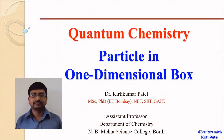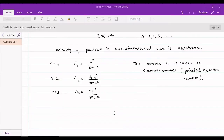Dear students, in our last lecture we had seen about quantum chemistry and we had started with particle in one-dimensional box. We had seen the derivation of the particle moving in one-dimensional box along the x-axis. In this lecture we will continue discussions on the particle in one-dimensional box. We will see the normalization of the equation derived and then plot it to show the probability densities. We had derived the energy for one-dimensional box.